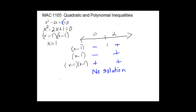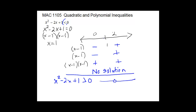If our problem had the inequality symbol turned the other way, then we would have wanted positive results. Both sections are positive, so the answer would be all real numbers excluding 1 — since there is no equals sign underneath — written in interval notation as negative infinity to 1, union 1 to infinity.